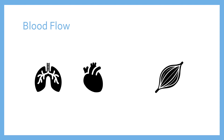As blood flows around the body, we'll start by tracking it from the heart. Deoxygenated blood travels from the heart to the lungs, which are nice and close by. That deoxygenated blood, shown by the blue arrow to represent that it's low in oxygen, travels from the right side of the heart to the lungs. When it arrives at the lungs, it picks up oxygen, and then returns back to the heart — now it's full of oxygen, represented by a red arrow.